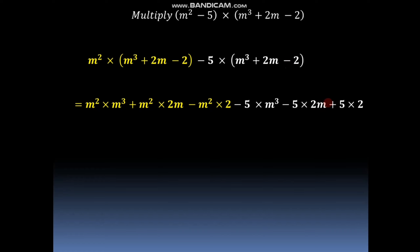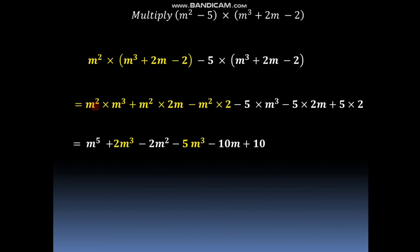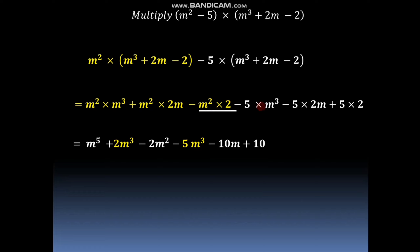The product of two negative numbers minus 5 into minus 2 will be positive, so plus 5 into 2. Now m square into m cube gives m raised to 5, as the bases are the same we add the indices: 2 plus 3 equals 5. Similarly 2 into m square into m gives 2m cube, minus 2 into m square, minus 5 into m cube gives minus 5m cube, minus 5 into 2 gives minus 10m, and plus 5 into 2 gives plus 10.